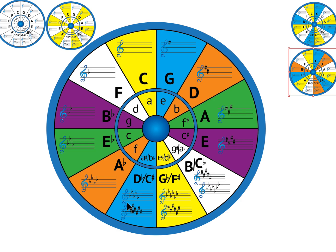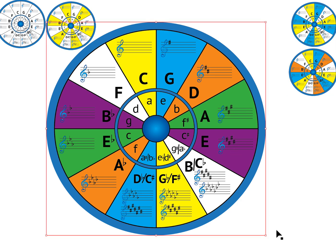The tritone splits the octave directly in half, so G to D flat is a tritone, D flat to G is a tritone. They each have a tritone partner: C to G flat, D to A flat, A to E flat, E to B flat, B to F. Each one has one note that is a tritone away. If we build a tritone on top of a tritone we're back at a tritone. The proper term is either augmented fourth or diminished fifth — it's six half steps and it splits the octave directly in half.